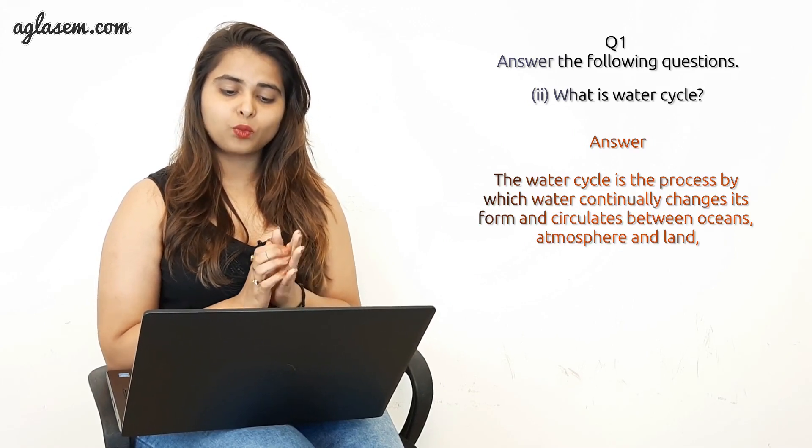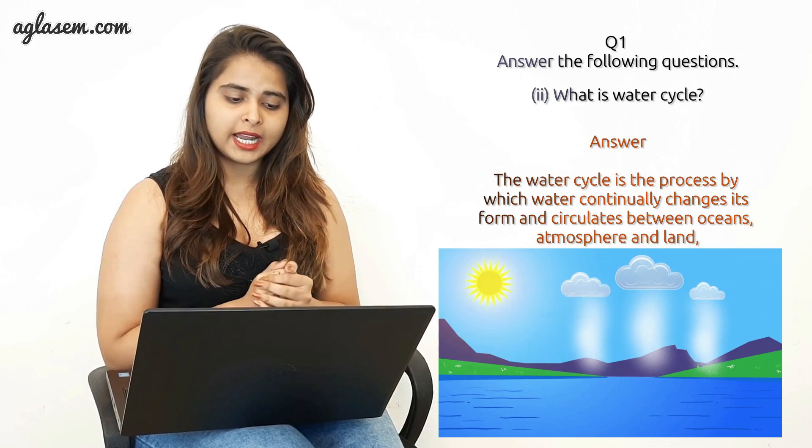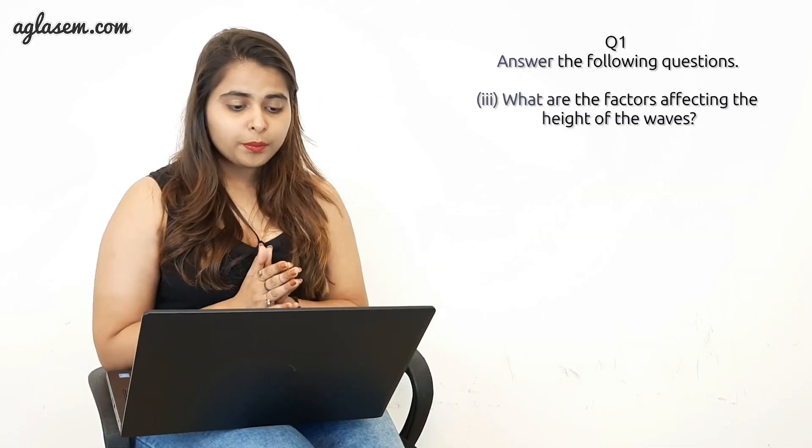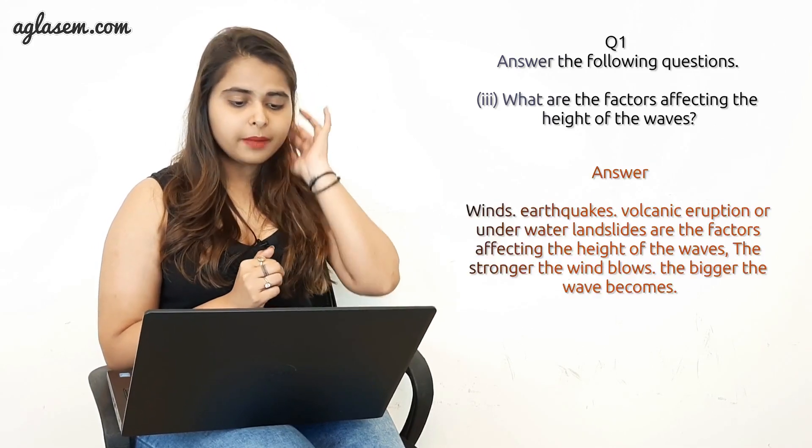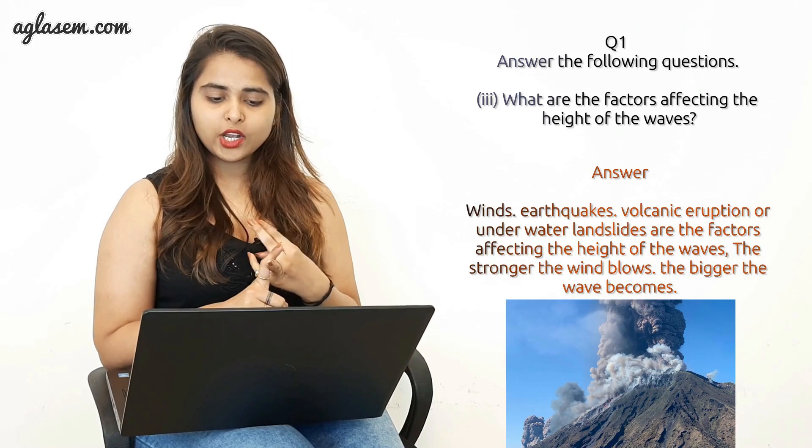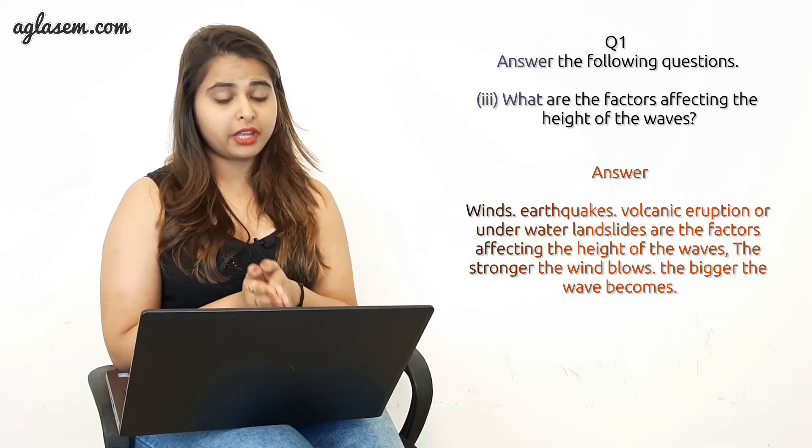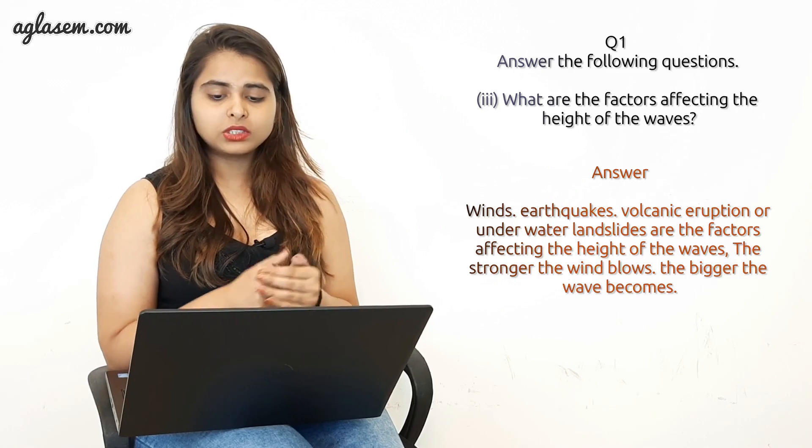Your answer will be the water cycle is a process by which water continually changes in form and circulates between ocean, atmosphere, and land. The third option is what are the factors affecting the height of the waves? Answer: Wind, earthquake, volcano eruption, and underwater landslides are the factors affecting the height of the waves. The stronger the wind blows, the bigger the wave becomes.